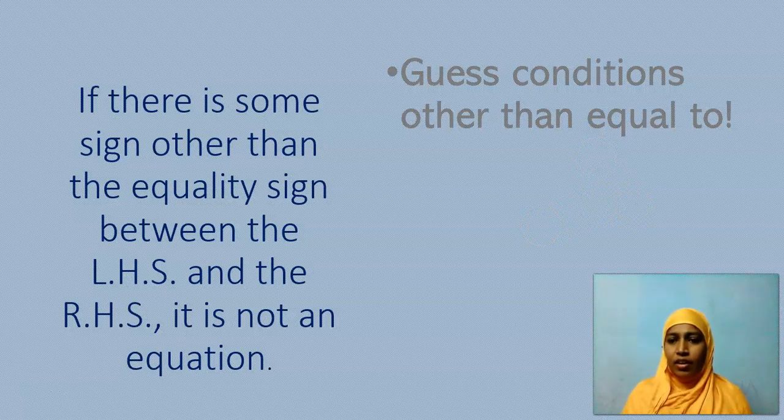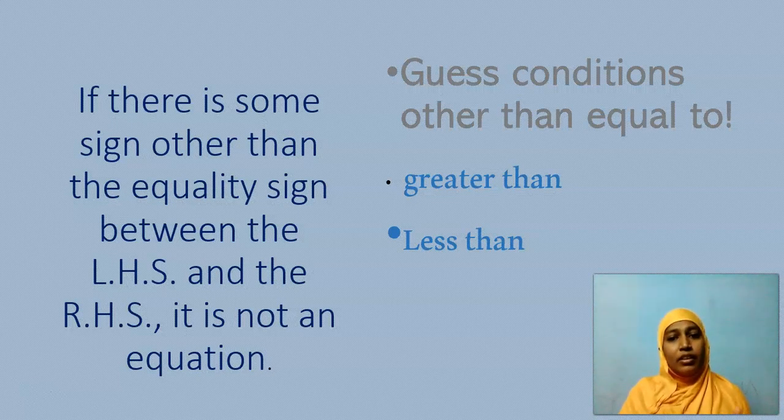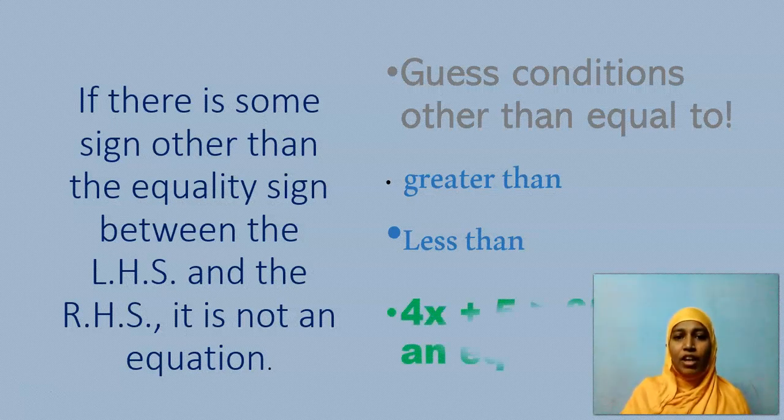Yes, it is a condition that the mark should be greater than 35 out of 100 to be passed. Greater than or equal to. So these are also state some condition. But these two conditions will not make that expression an equation. Is it clear? If we have greater than or equal to sign, it is not an equation. We call them as inequalities.